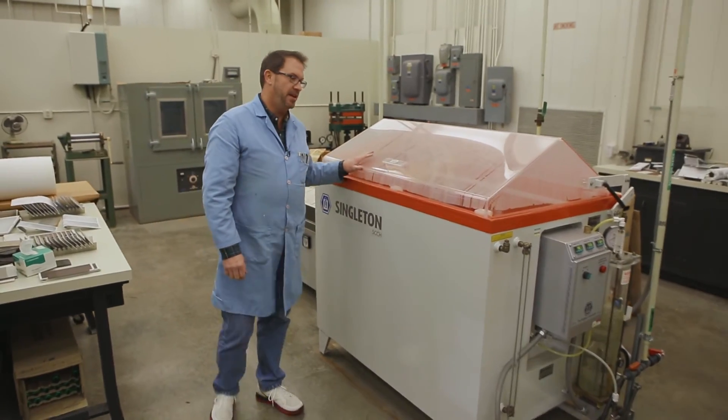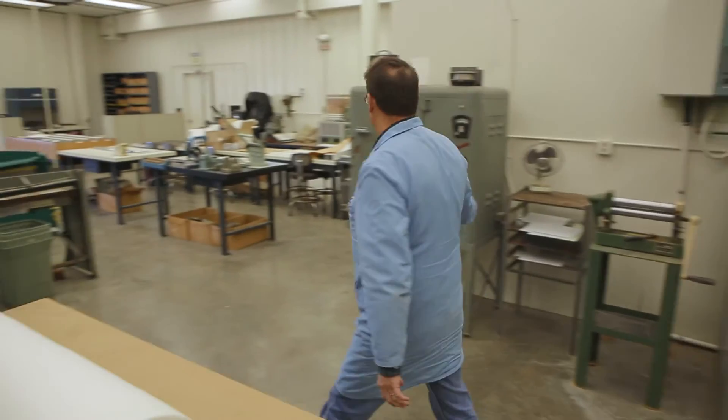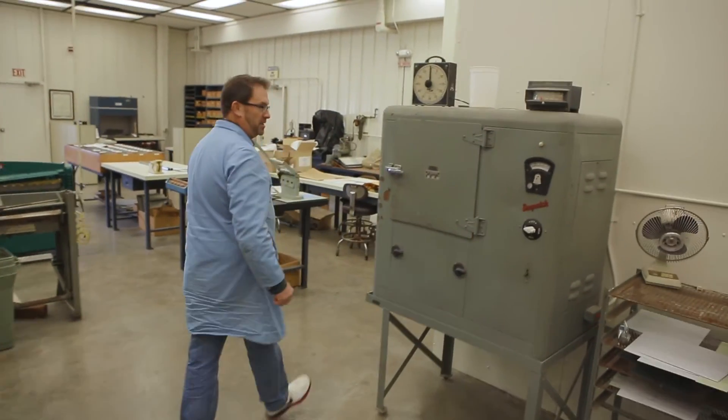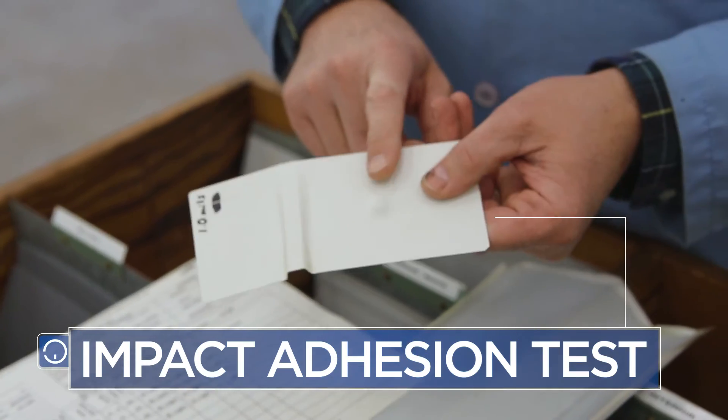Here we have the humidity cabinets. We have ovens, drying paint. Also back here we have a spray booth. This is an impact adhesion test.